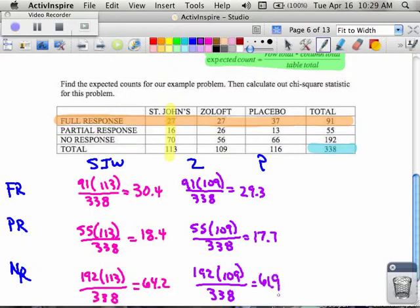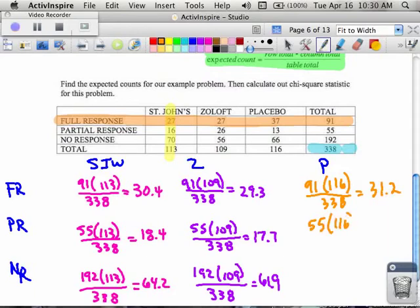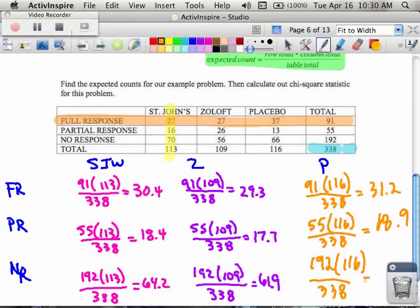And I do this for all three different treatments. I'll actually move the placebo over a little bit. And maybe I'll go with orange. So then for the placebo, in the last one, 116 is going to be my new number in the parentheses. So I'm going to have 91 times 116 divided by 338, which is 31.2. And then the next row is 55 times that same column of 116 for the placebo, divided by the table total of 338 for a total of 18.9. And then I have the last one, which was the 192 times that column total of 116 divided by 338 for a grand total of 65.9.